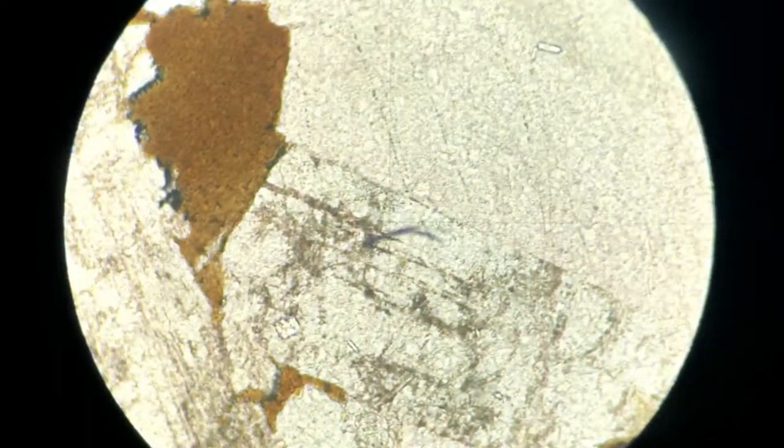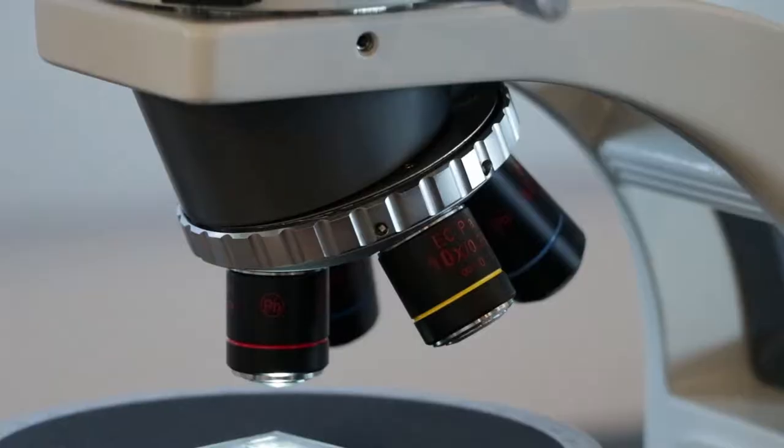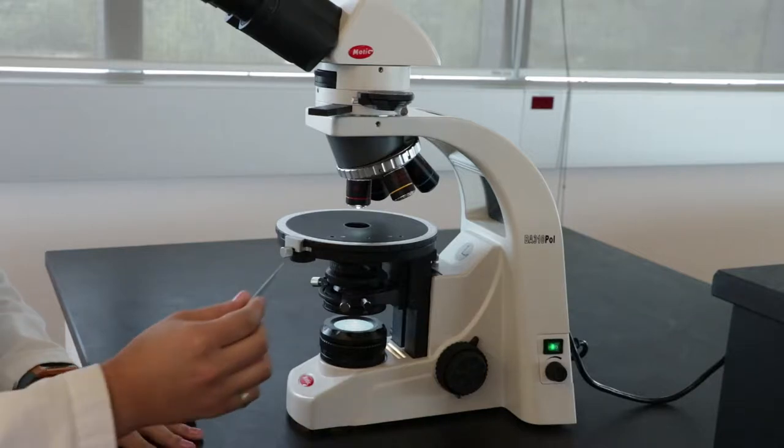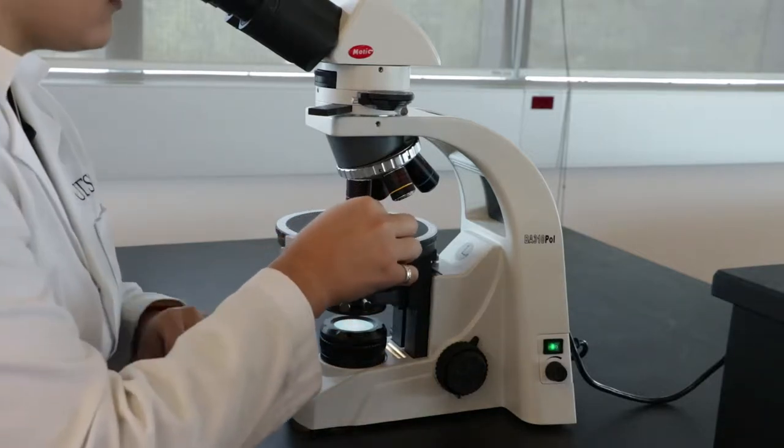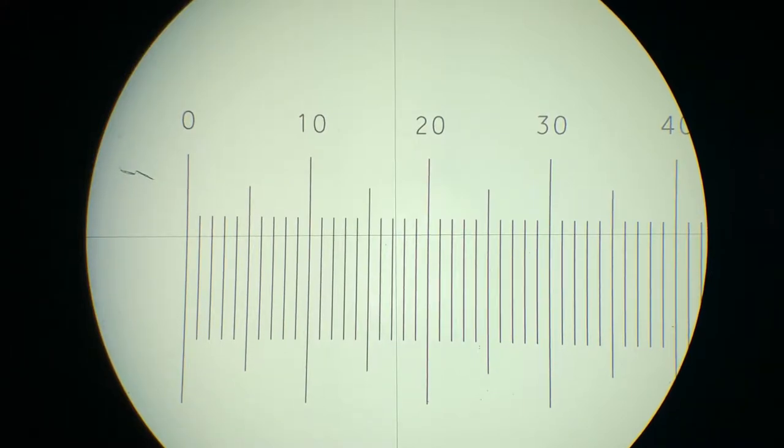This helps us estimate the size of individual minerals during thin section microscopy. To do this, first ensure that the 4x objective is in place and put the micrometer slide on the stage. Center and focus the scale so that you can read it through the eyepieces.